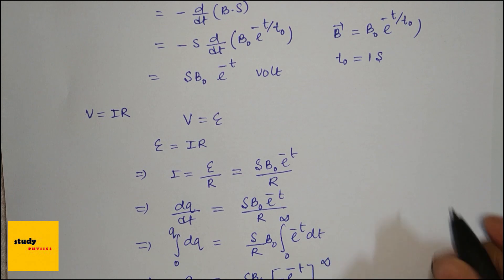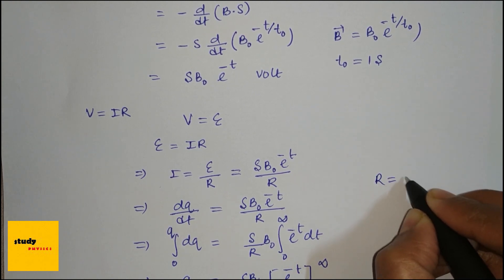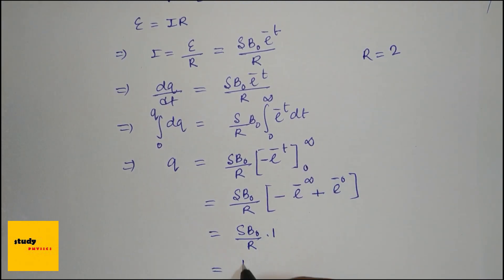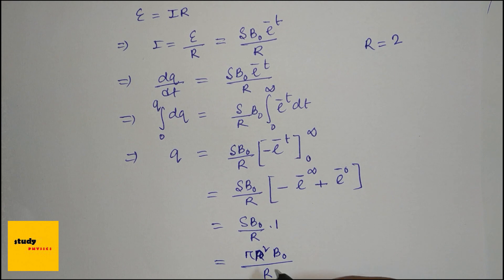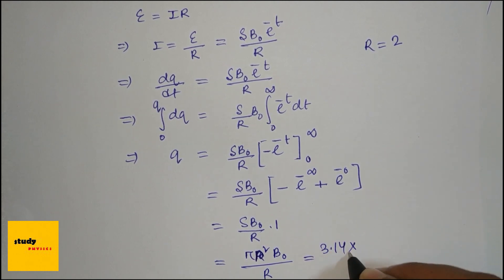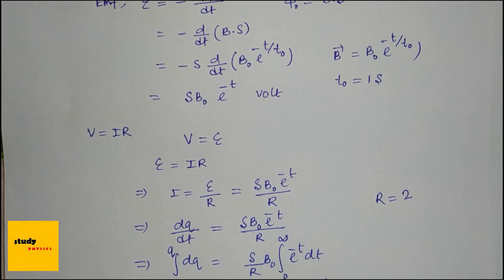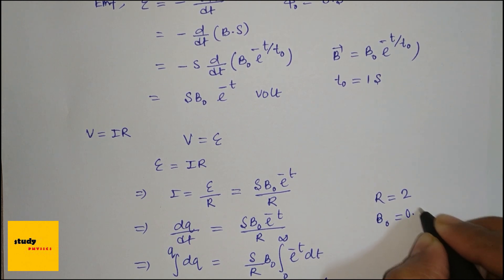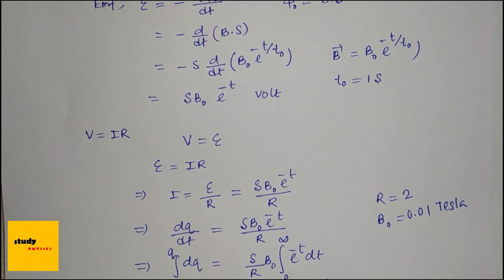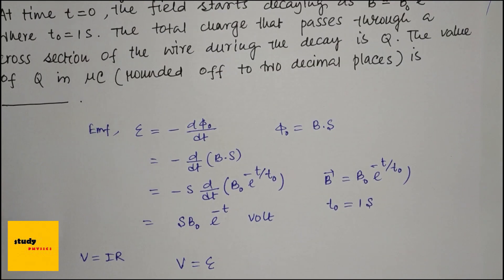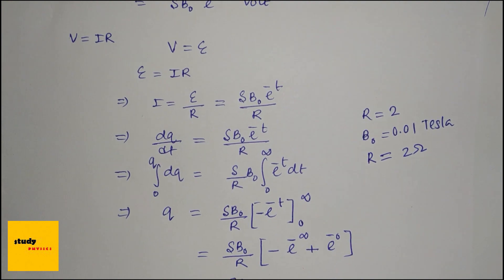This is a circular loop with radius r = 2 cm. So we can write q = πr²·B₀/R = 3.14 × (2)² × 0.01 / 2. Here the radius is 2 cm, B₀ is 0.01 Tesla, and resistance R = 2 ohm.